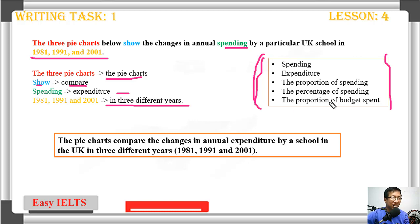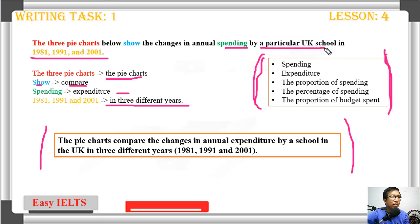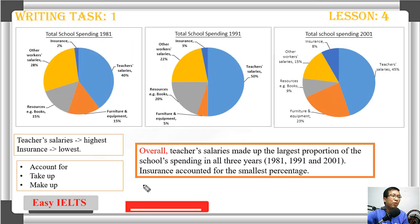So now we have our introduction: 'The pie charts compare changes in annual expenditure by a particular UK school in three different years: 1981, 1991, and 2001.'